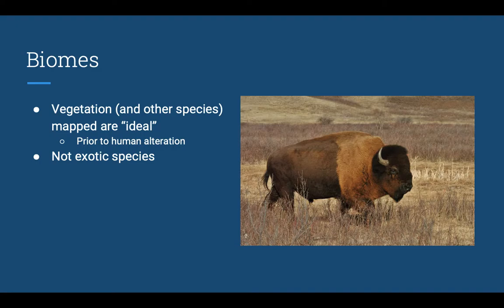We'll also get into the animals, the critters that are there. Plants are important, but I get more excited about the fuzzy things that run around in a biome. Whatever organisms we're talking about, when we're looking at biomes, we want to make sure we're looking at the ideal species — things that have evolved and adapted within that biome — and not things that humans brought over from a different biome. That's something humans love to do: domesticate things and introduce them into a new ecosystem. We call those exotic species — any plant or animal that is not native or indigenous to a specific ecosystem.